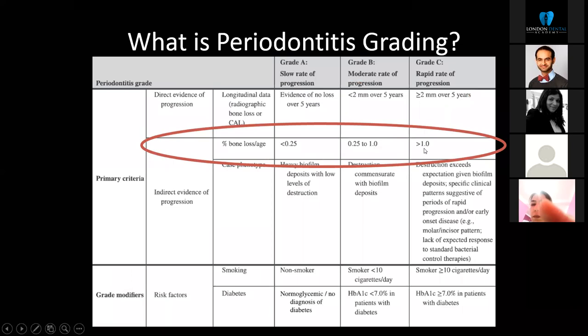Grade modifiers or risk factors help refine grading. The BSP has decided to focus on the bone loss-to-age ratio column to keep things streamlined and quick for busy UK practitioners, which is sensible. There is also a departure from using percentages in HbA1c — the glycated haemoglobin — which reflects how well controlled a diabetic patient is over the preceding three months.